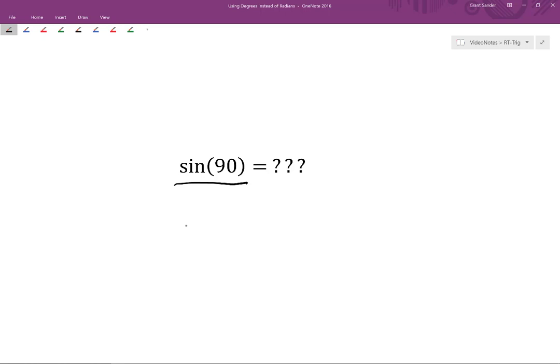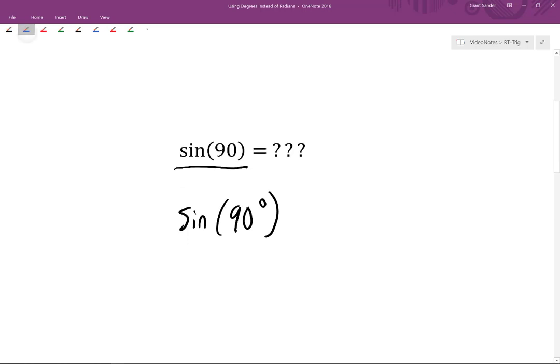So in this case, we would actually want to write sine of 90 degrees. If we don't indicate this, we generally, at least in mathematics, assume that this number in the input is a number of radians.